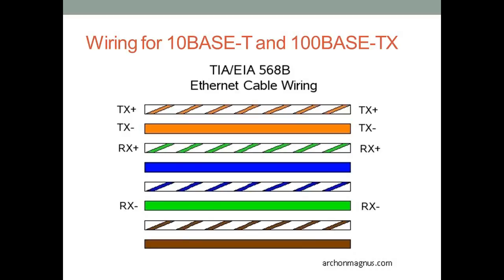In 10BaseT and 100BaseTX wiring, pins 1 and 2 are used for transmit positive and negative — twisted together to eliminate interference and reinforce each other. The green-white wire is on pin 3 and the green-dark wire is on pin 6. The reason it skips around like this is to avoid interference between pairs. Pins 1 and 2 are used for transmission; pins 3 and 6 are used for reception.